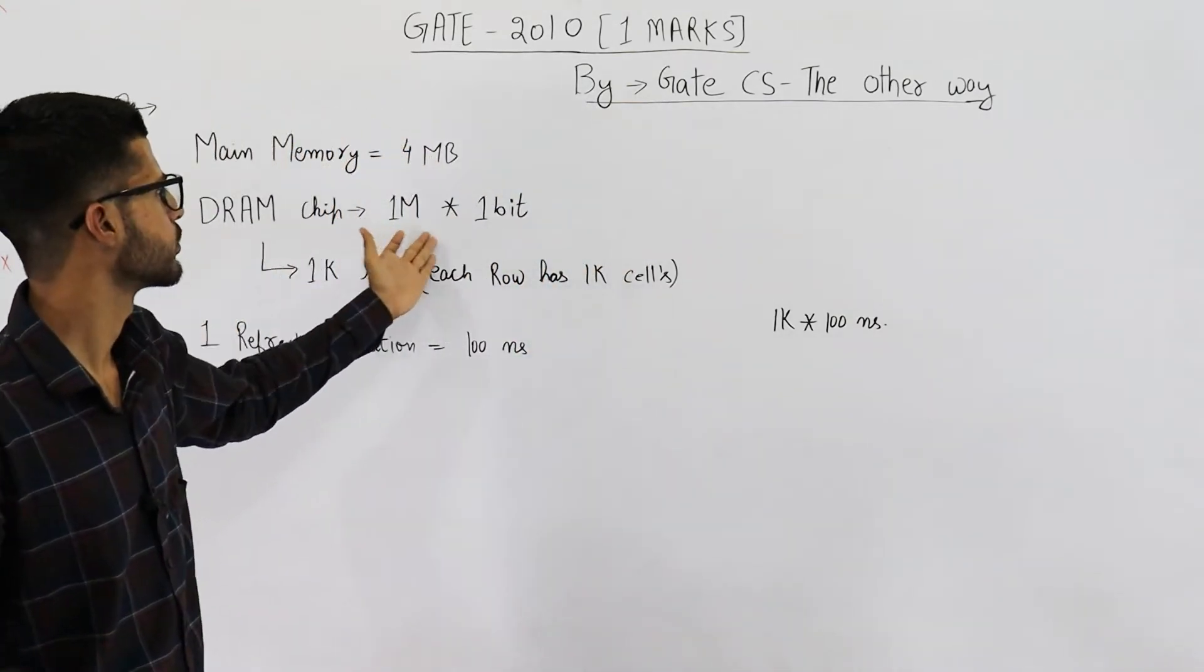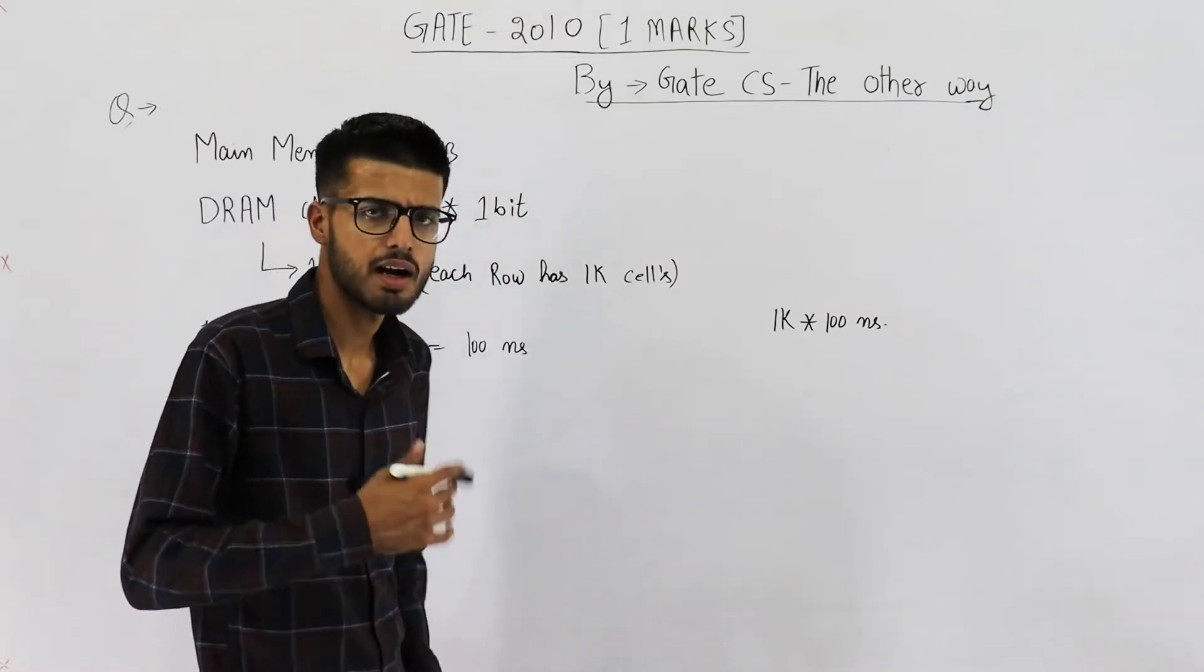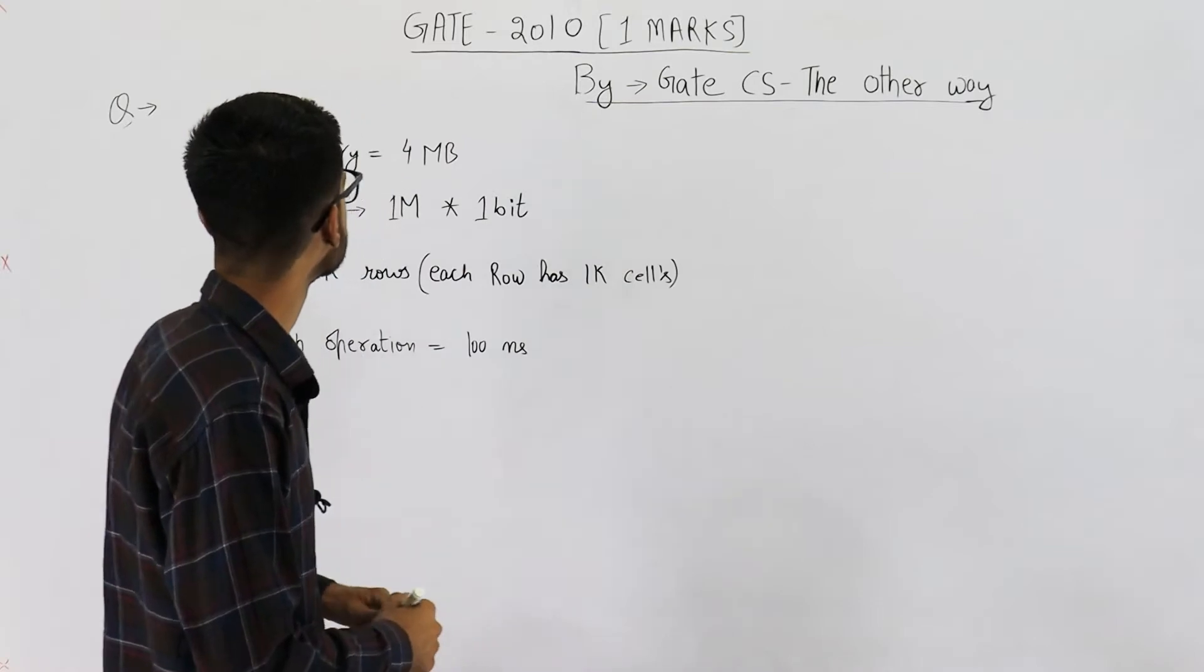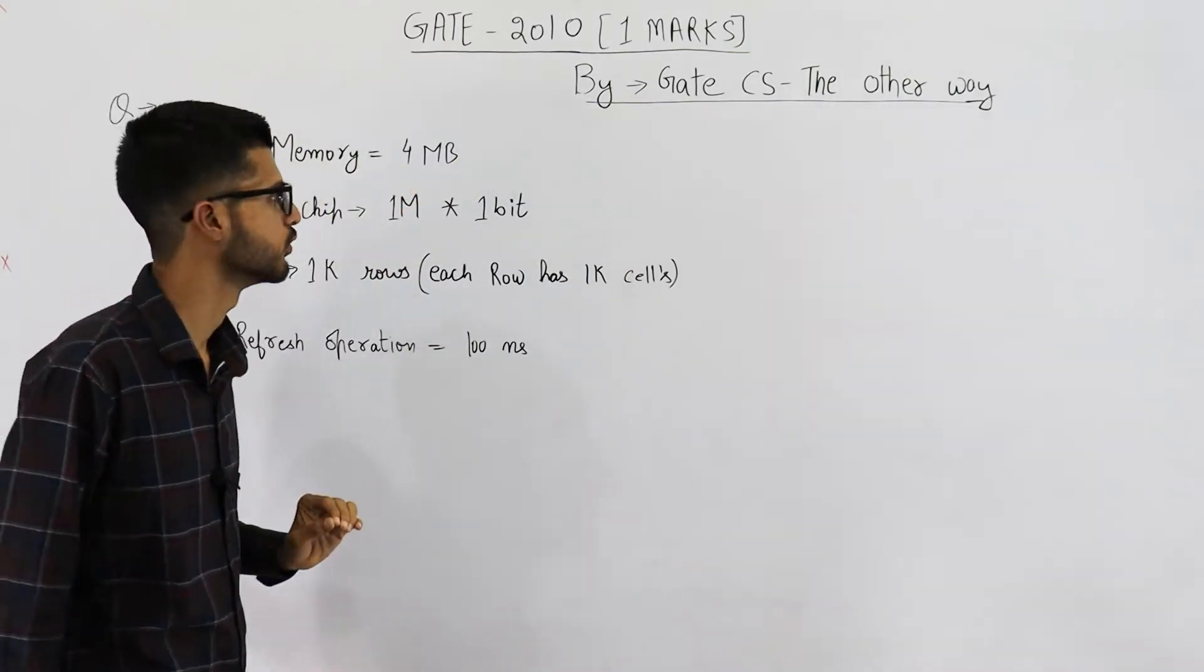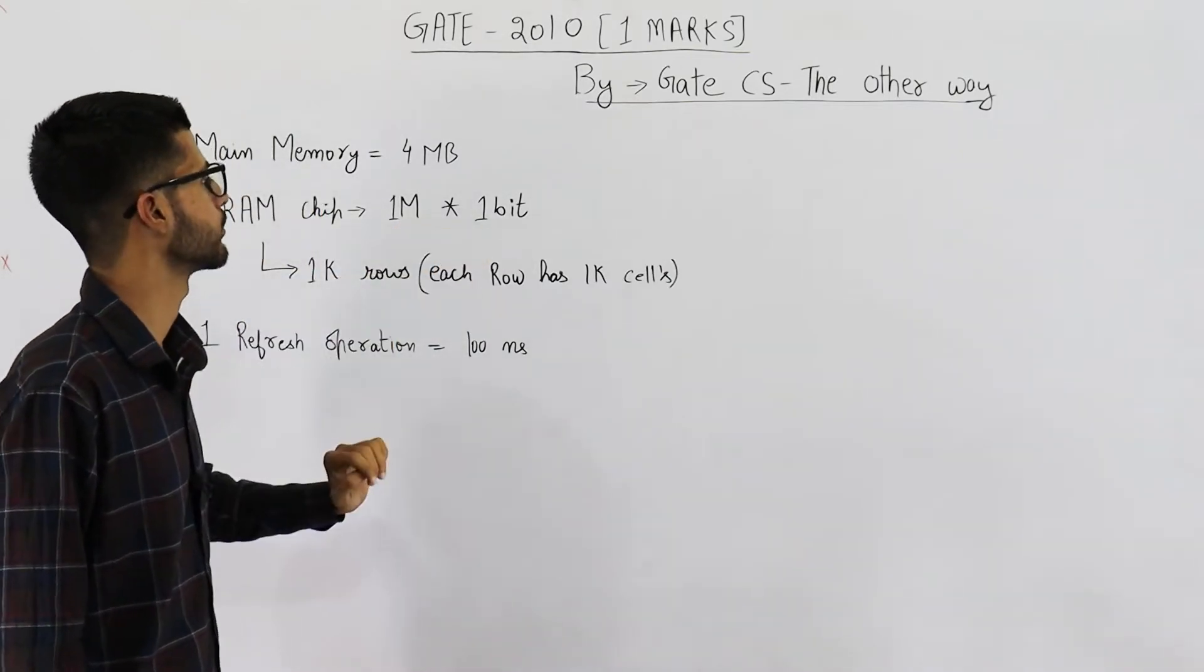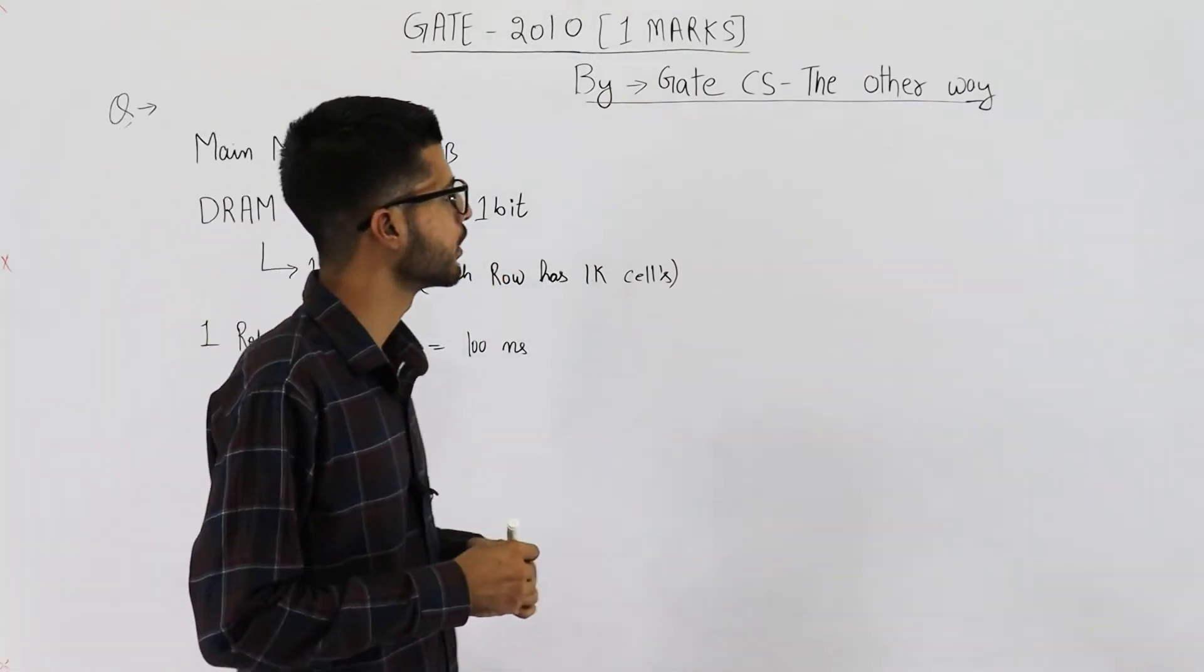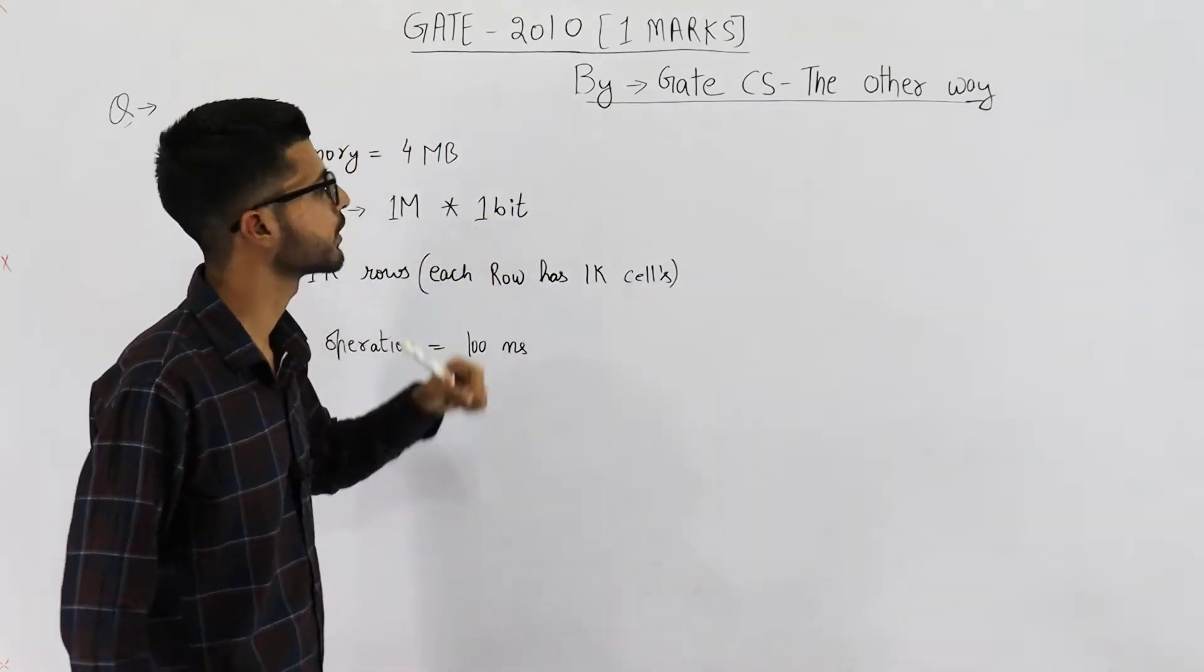Like, what are these notations? How come we get 4MB using these chips? And how are they placed? And so on. Let's go into a bit of detail. So, you see, total main memory is 4MB. And 1 DRAM chip is 1M x 1 bit. Now, let's understand this notation. 1M x 1 bit means we have 1M locations and size of each location is 1 bit.